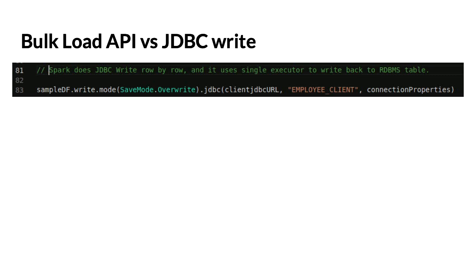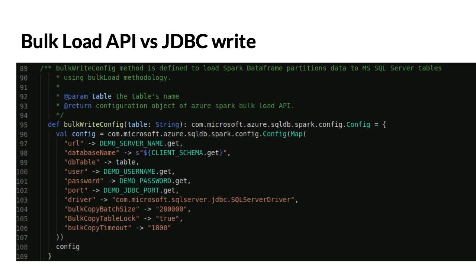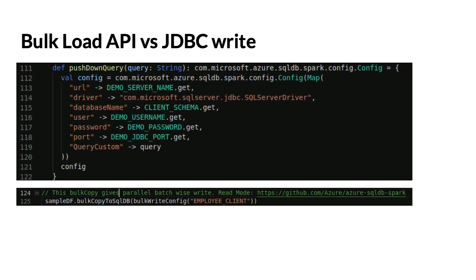When writing to RDBMS, the default JDBC write is row-by-row, which is expensive for both reads and writes. The best approach for writes is to use bulk load APIs. For example, using Azure's bulk load API, you can specify a bulk load batch size to write in batches. You can also enable bulk load table lock. Most RDBMS systems now support this mechanism. The bulk load API versus JDBC write shows a significant performance difference.